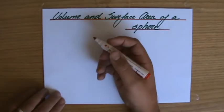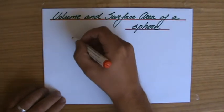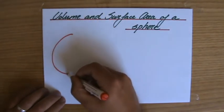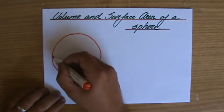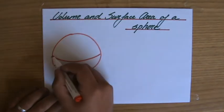Now a sphere is, if you like, a three-dimensional circle. So can you think of any examples in real life about what a sphere is? Can you think of anything?